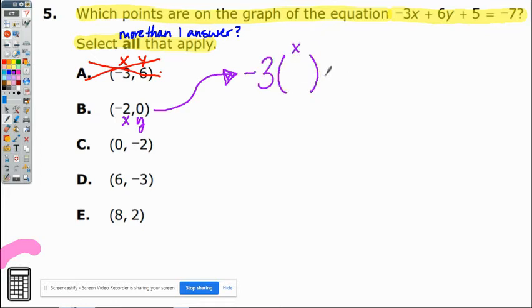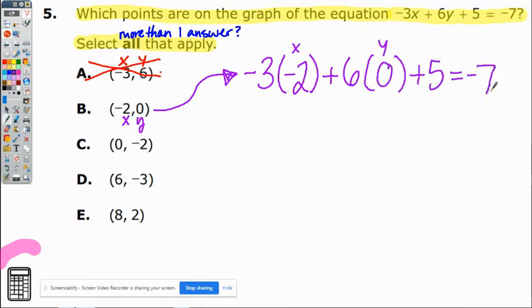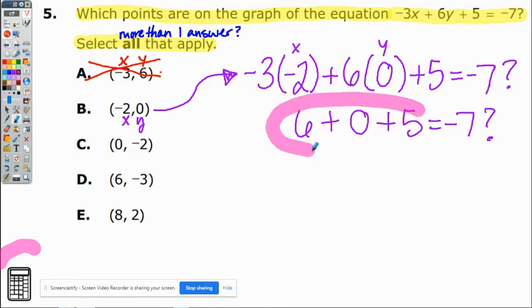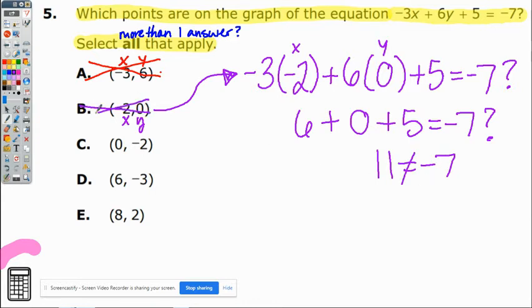The next one we have is -3x and that's going to be the number -2, plus 6 times y which is the number 0, plus 5, and we're going to see does it equal -7. So negative times negative is positive, anything times 0 is 0, and then bring down the positive 5. Again from here you could just stop because you are adding a bunch of positive numbers so there's nothing negative to be seen and we know that positive 11 definitely does not equal -7. So B is also incorrect.